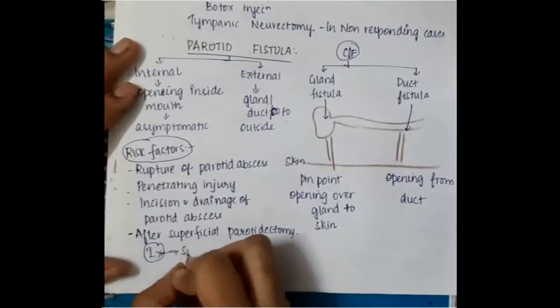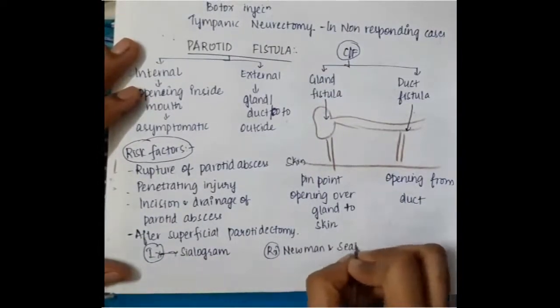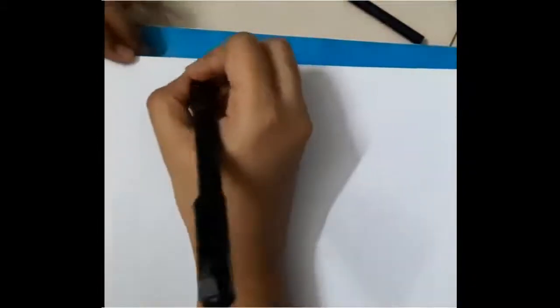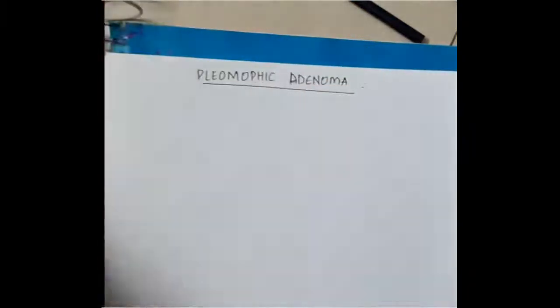Investigation includes we can do sialogram where you can find the tract of the parotid ducts. Treatment is Newman-Seabroch operation. Newman-Seabroch operation is done. Then, pleomorphic adenoma.